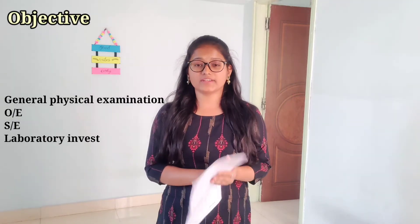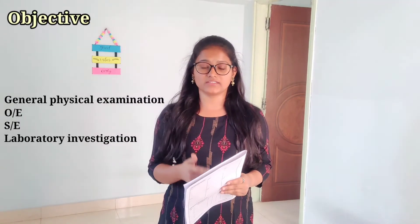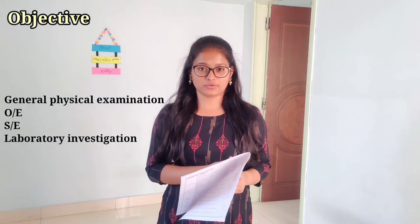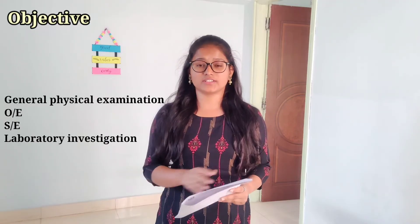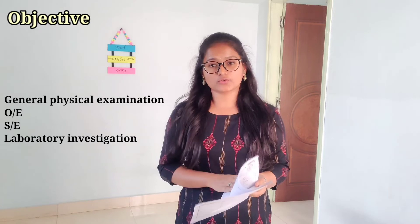In the Objective part, it includes information like general physical examination — whether the patient is poorly built or moderately built. Next is the on-examination section, which includes the patient's blood pressure, pulse rate, and oxygen levels, and also whether the patient has pallor, edema, lymphadenopathy, icterus, cyanosis, or inflammation. In the systemic examination, the patient's CNS, CVS, respiratory system, and abdomen information are included. Next is laboratory investigations, which include hematology, biochemistry, renal function test, liver function test, urine analysis, electrolyte levels, lipid profile test, and X-ray reports. All these tests are not advised to a single patient.